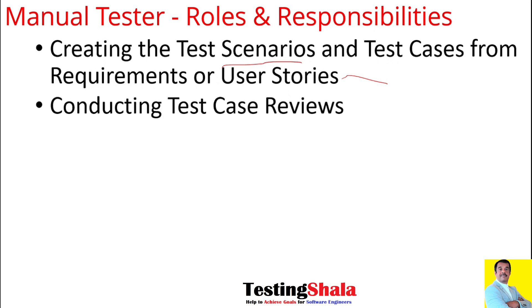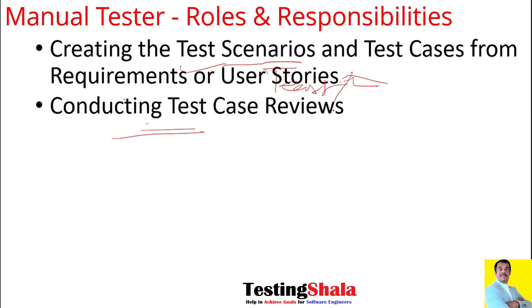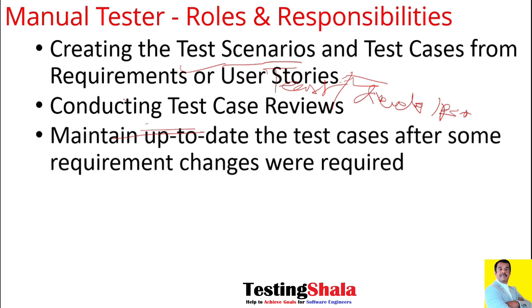Once we are able to write the test scenarios and test cases, we are also required to review them. Peer reviews can be done by a co-worker, another manual tester, a test lead, a senior person, or even a developer and BA, so that whatever test scenarios or test cases we have written are appropriate as per the given user story.